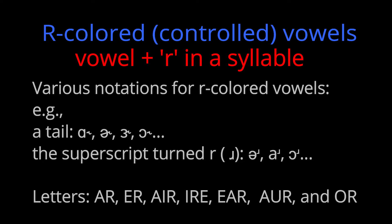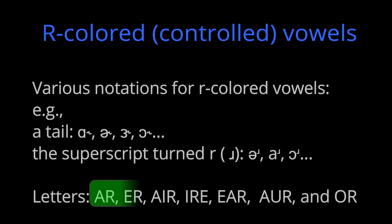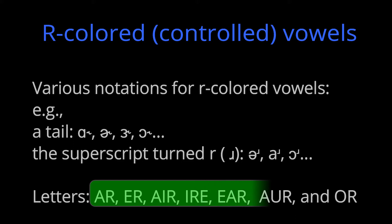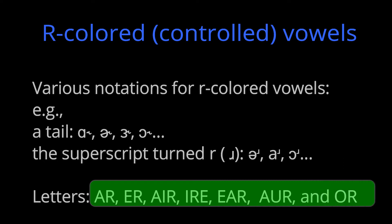There are seven R-colored vowels in American English: R-er, air, air, ear, hour, and or. Let's look at example words for these R-colored vowels.